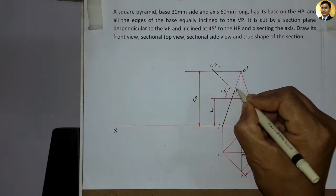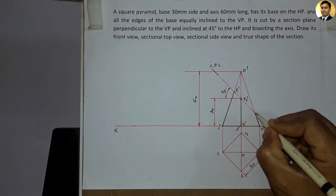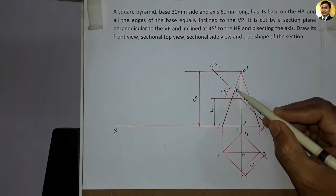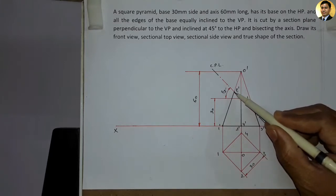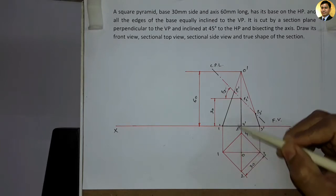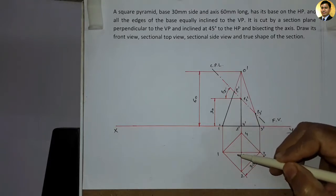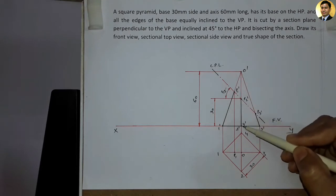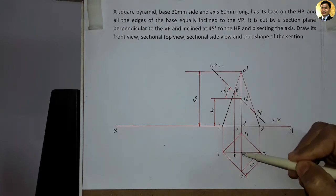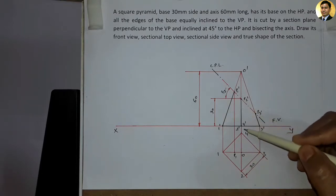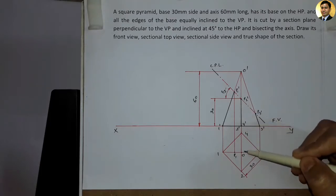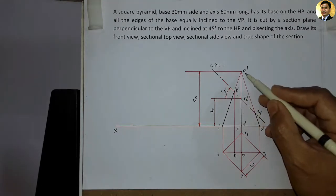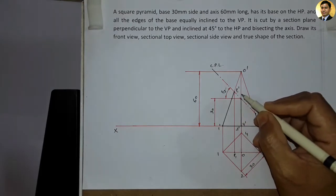This is the cutting plane line, and on the slant edges where it intersects we mark the points. Here we mark point P1, here we mark point P2, and here we mark point P3. From P1 in the front view, we draw projection lines down to the top view to mark point P1. P2 is on the axis point, so P2's projection is transferred to O2; we draw a horizontal line and where it meets the line from O2, we mark point Q.